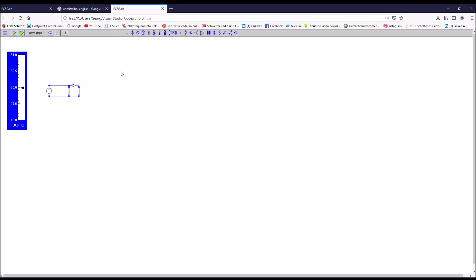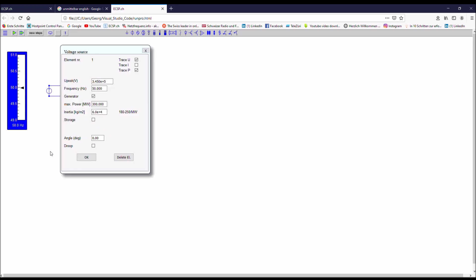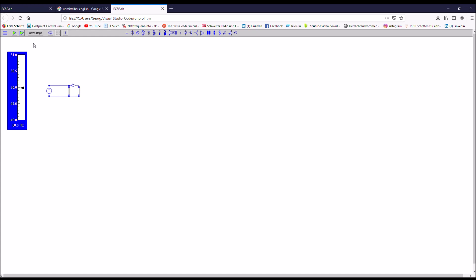In the previous exercise, we have seen that it was quite tough to control the frequency manually. And therefore, we want to have some support now by this so-called droop of the generator. You can click it and then you get some support to control the speed of the generator.